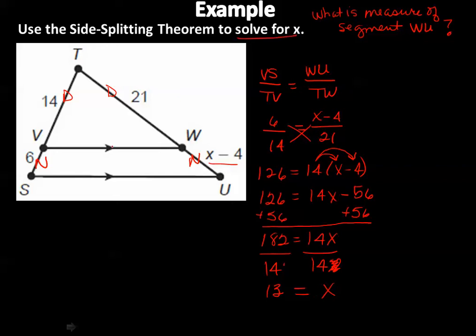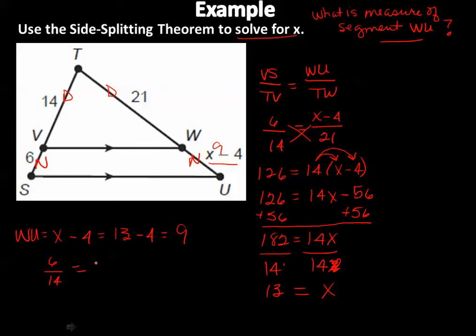They told me to solve for x — that's x equals 13 — but I also asked for the measure of segment WU. WU equals x minus 4, so plugging in 13 gives WU equals 9. Checking: 6 over 14 equals 9 over 21? 6 times 21 is 126, and 9 times 14 is also 126. It checks out.